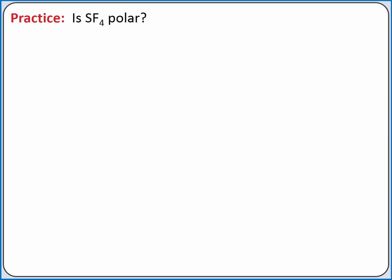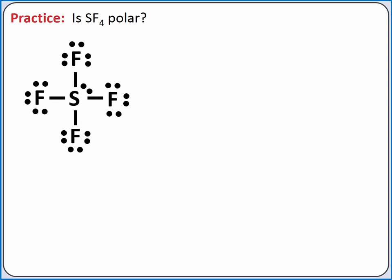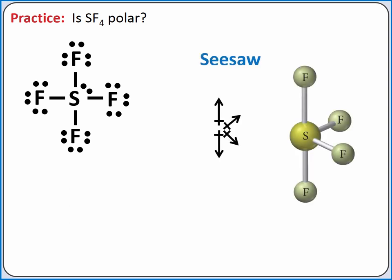In our last example, we'll determine if sulfur tetrafluoride is polar or nonpolar. We'll start again with our Lewis structure. We have four bonding groups and one lone pair of electrons on sulfur, so our molecular geometry is seesaw. With a seesaw molecular geometry, even all identical polar bonds cannot cancel each other out, so our molecule is polar.